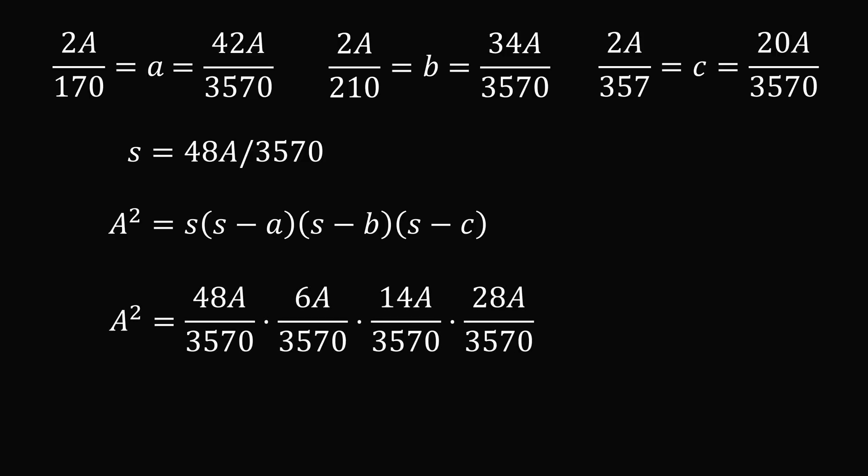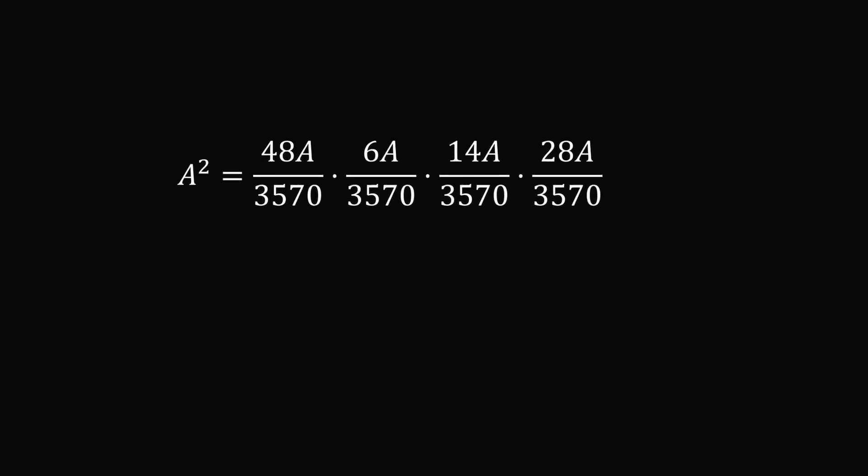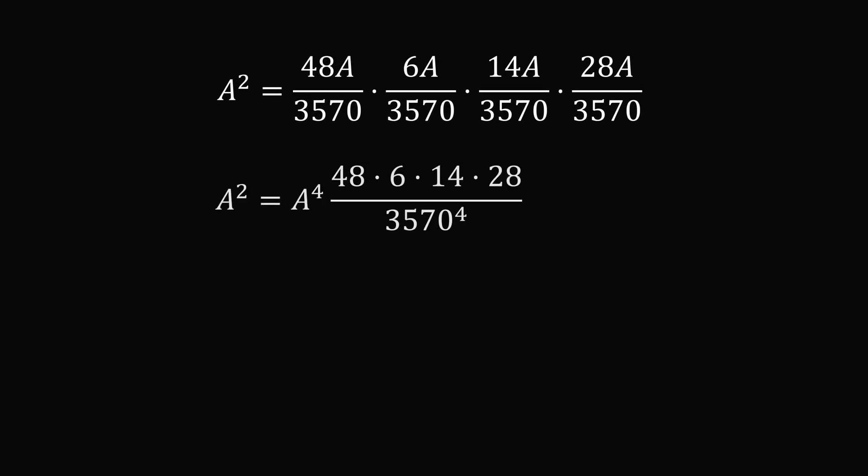It now remains to solve for the area. We just need to simplify this equation. On the right-hand side, we have the area to the power of 4, and on the left-hand side, it's area squared. So we can cancel out an area squared, and then we can rearrange the equation.